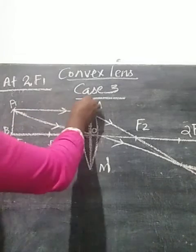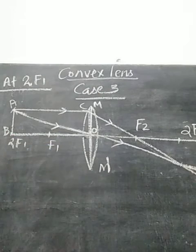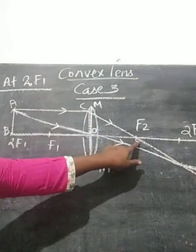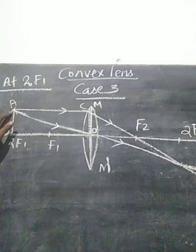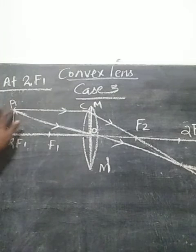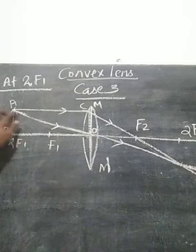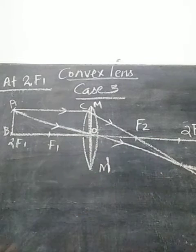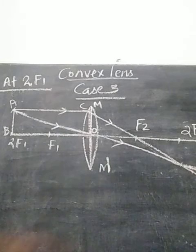The first ray AC comes from the top of the object AB. AC is parallel, gets refracted, and passes through F2. This is the first refracted ray. The second ray, according to the third rule, passes through the optical center without any deviation. That ray will move straight.